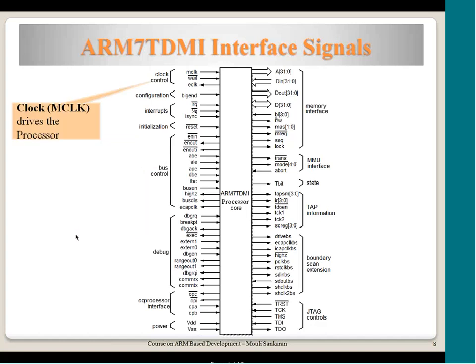What is the clock going into the processor? Any processor needs a clock. In the ARM processor we call it MCLK, which stands for memory cycle clock. This could come from an external crystal or a clock generator and multiplier circuit. Whatever modifications are made externally, what comes into the processor is MCLK, on the basis of which the processor operates.